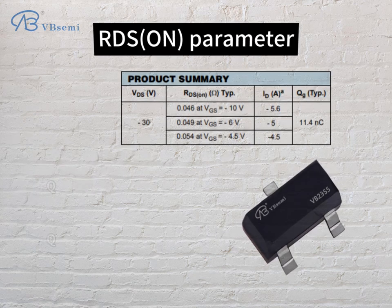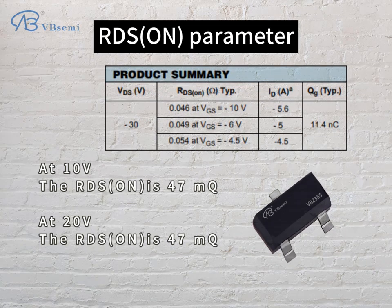RDS(on) parameter: at 10V the RDS(on) is 47mΩ; at 20V the RDS(on) is also 47mΩ.